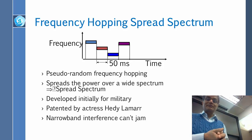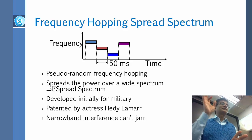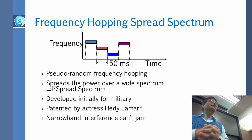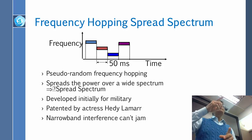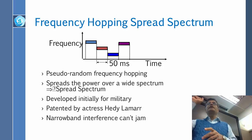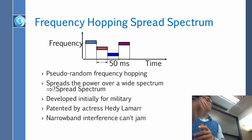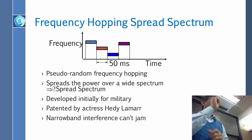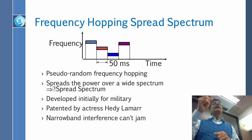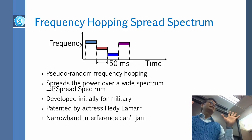I haven't yet explained what spread spectrum is, but frequency hopping I have explained. Frequency hopping means that we change the frequency every so little time, randomly, and we know the random number generator.